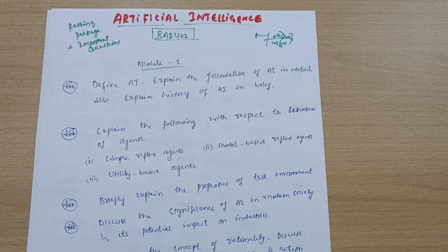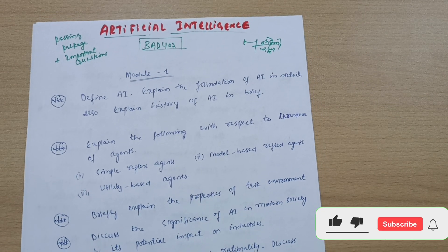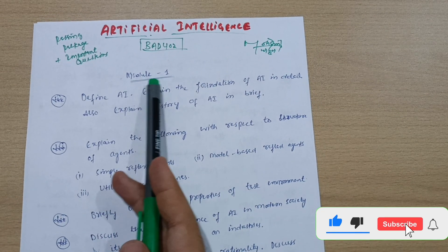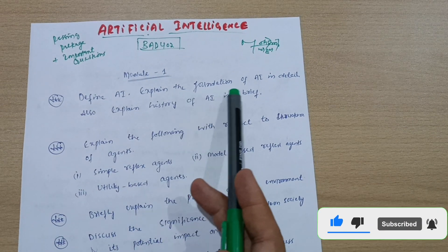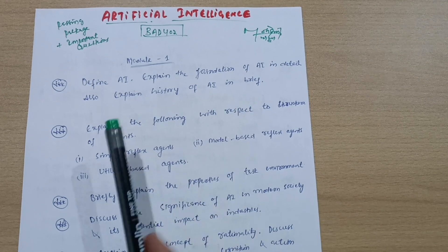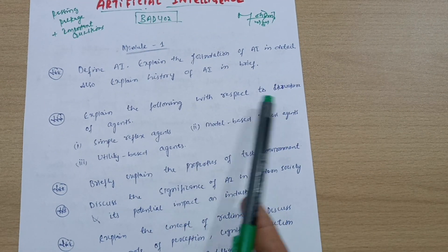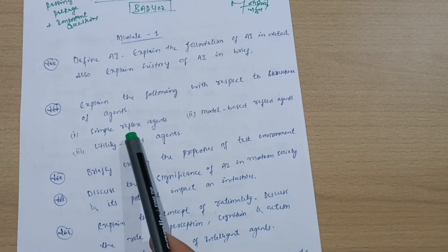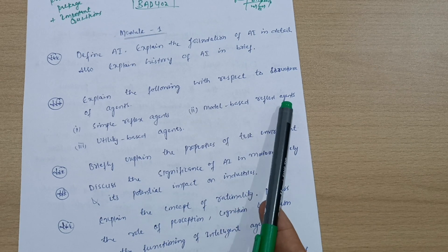Here is Module 1: Define Artificial Intelligence. Explain the foundation of AI in detail and also explain history of AI in brief. Explain the following with respect to structure of agents: simple reflex agents, model-based reflex agents, and utility-based agents.